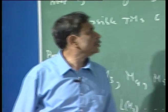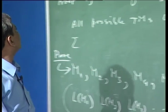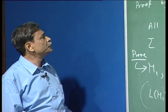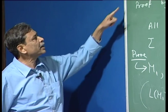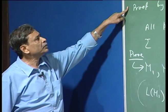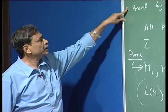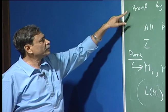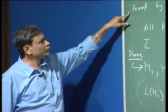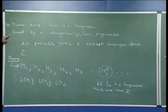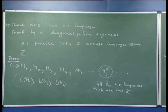We continue our arguments that will show that there are non-recursively enumerable languages. We recall that the proof will be by a diagonalization argument, and to begin that argument,